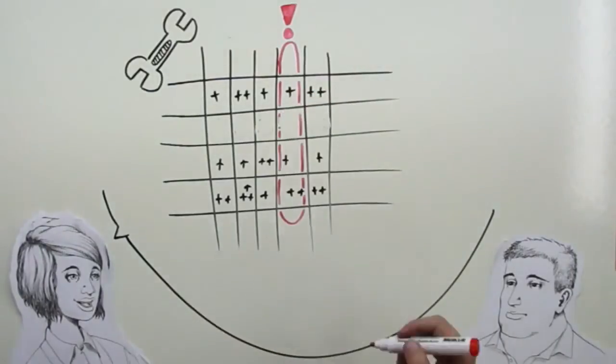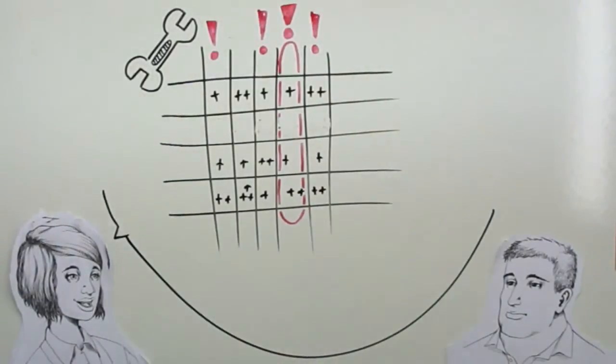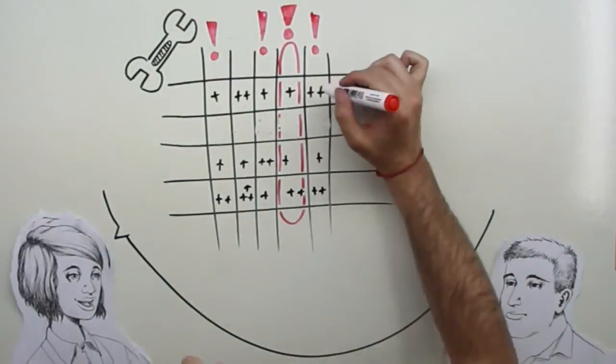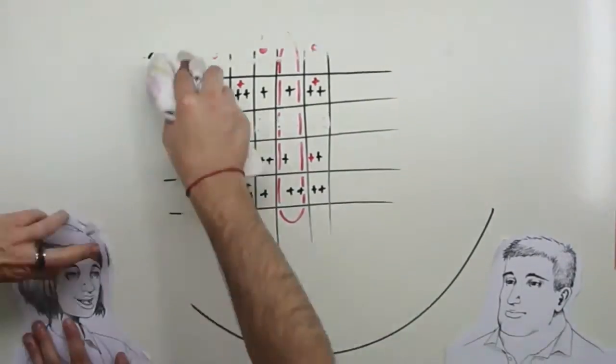You should furthermore set minimum standards for each discipline. In my company, which is medium in size, I have come to the conclusion that at least two employees should have the highest score for each category.